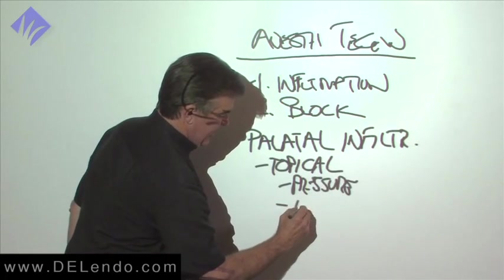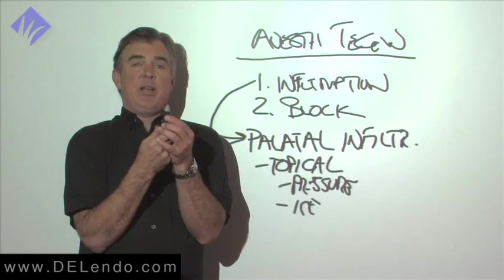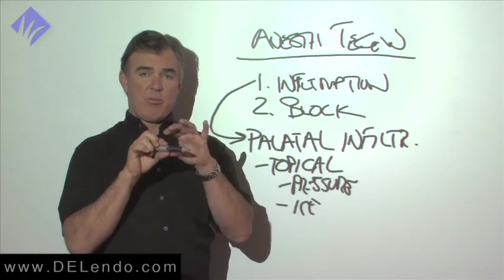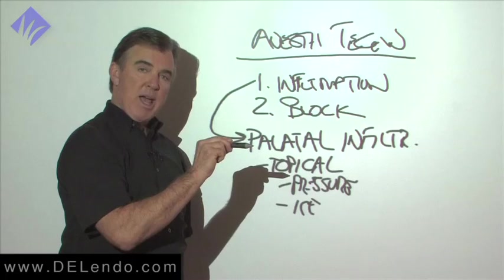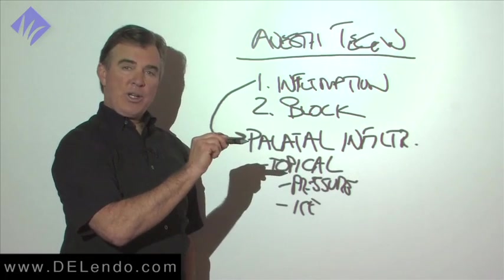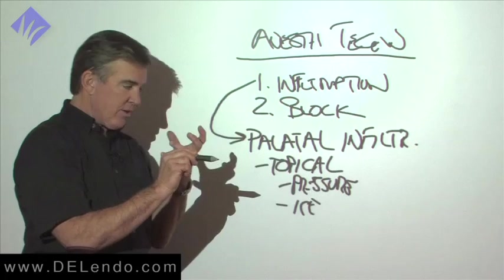Probably one of the best is ice cold. If we put an ice stick, the same ice stick we may have got out of an empty anesthetic carpule, pull it out, wrap it in the gauze, and just park it in the infiltration site on the patient's palatal tissue, hold it there for 20 seconds, put the needle in next to it, they won't feel it at all if you give a slow injection.